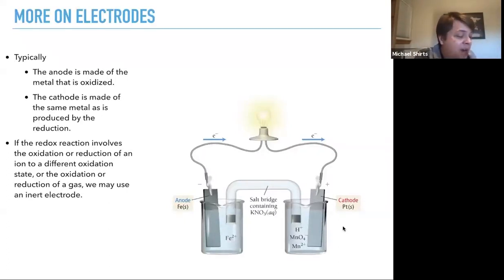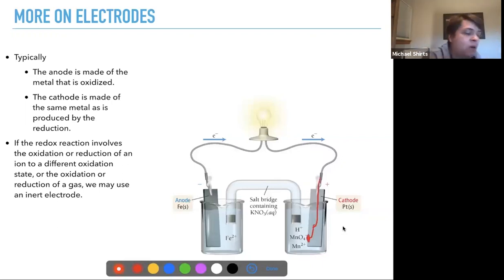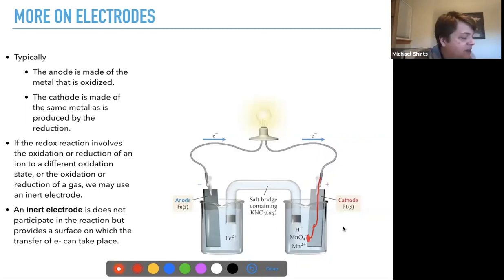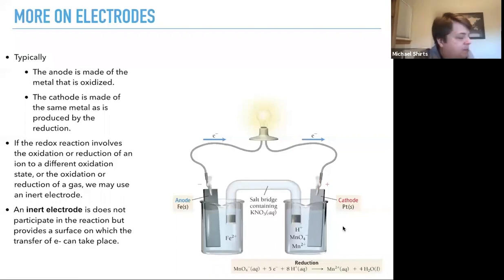In this case, a common cathode for this would be platinum because you can get a catalysis of that reaction occurring on the platinum surface. The reaction occurs on the surface, so the electrons can flow into that reaction, flow from the manganate ion and create manganese 2+ at the surface, because the electrons go through here and then flow onto the ions that are at the surface.